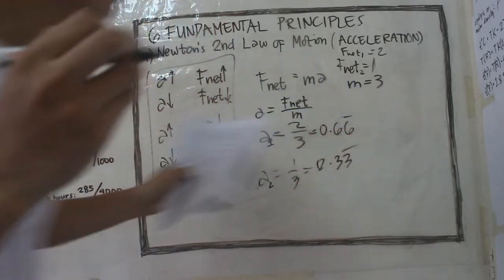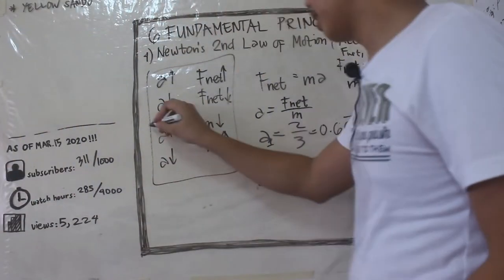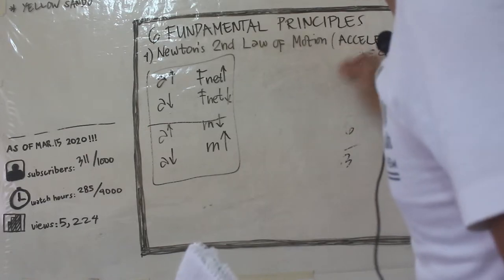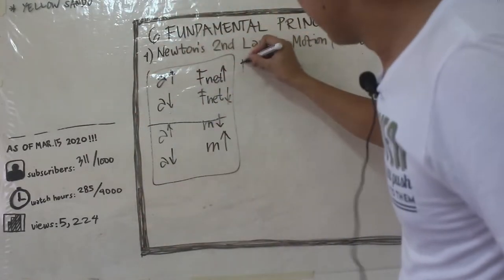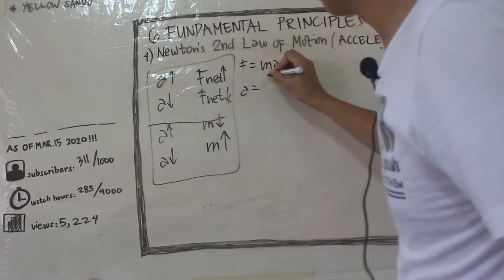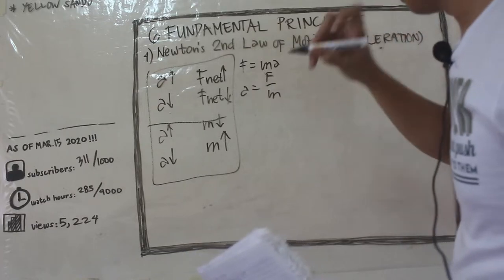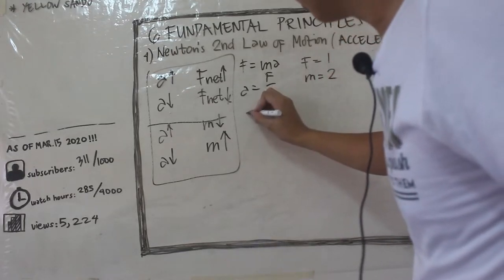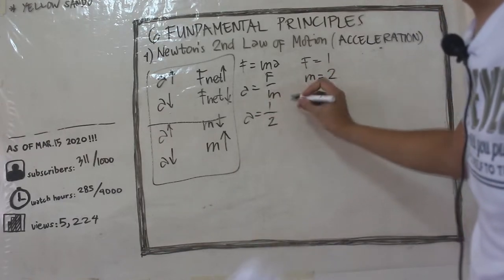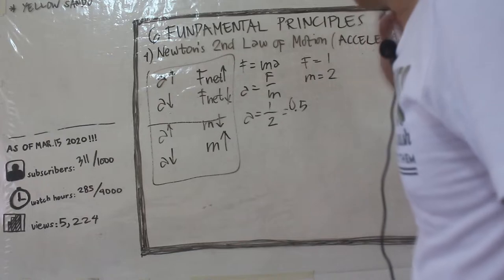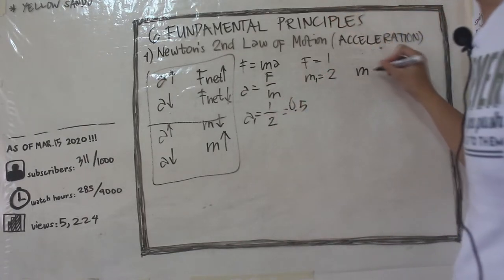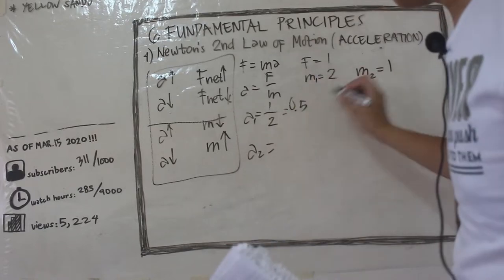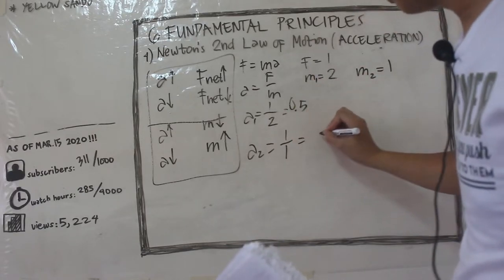How about this — na yung acceleration is inversely proportional to the mass of the object? F = MA, so A = F/M. Let us set value for F as 1 and M equal to 2. So makakakuha tayo ng value na 0.5. How about M equal to 1? Magiging 1 over 1, which is equal to 1.